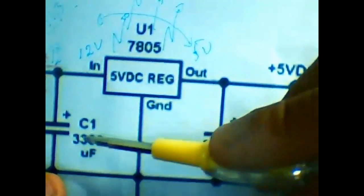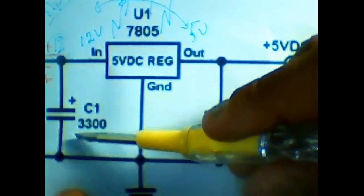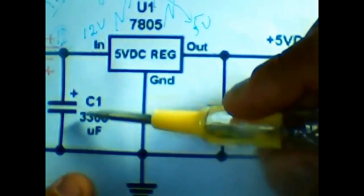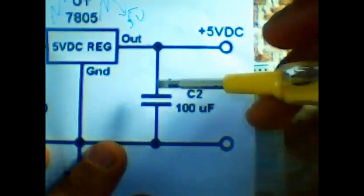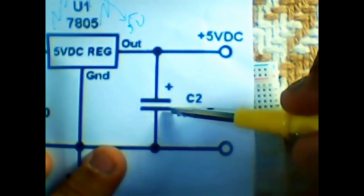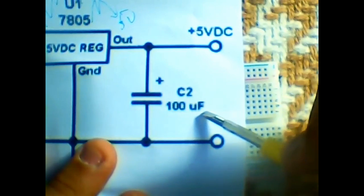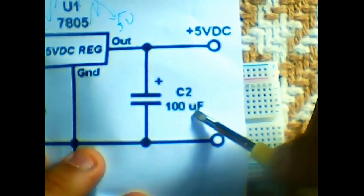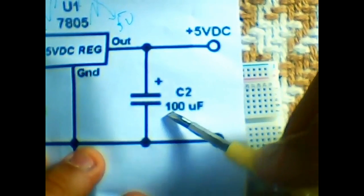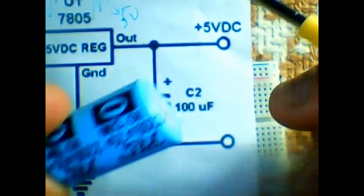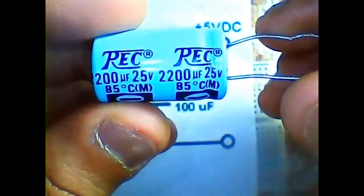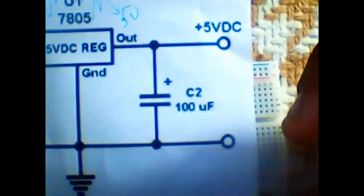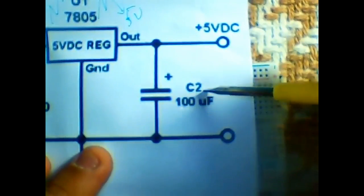Here we have some capacitors. You don't necessarily need these ones here, but you definitely need this one right here. This one makes the voltage smoother, but it's not as important. Here we have 100 microfarads — it's better to have more, something like 2200 microfarads.